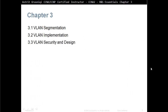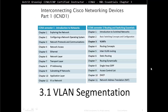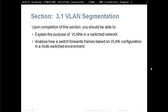Chapter 3 is divided into three sections: Section 3.1 VLAN Segmentation, Section 3.2 VLAN Implementation, and Section 3.3 VLAN Security and Design. This is Section 3.1 VLAN Segmentation. Upon completion of this section you should be able to explain the purpose of VLANs in a switched network and analyze how a switch forwards frames based on the VLAN configuration in a multi-switched environment.